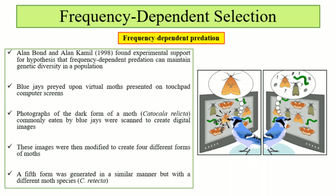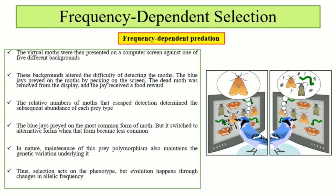Their pictures were displayed on touchpad computer screens. A fifth form was also generated in a similar manner but from a different species, Catocala retecta, which more closely resembled the others. The virtual moths were presented against five different backgrounds, which were also changed — like in a natural environment where prey can blend with its background.